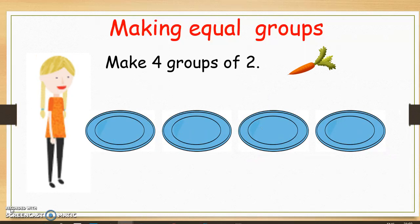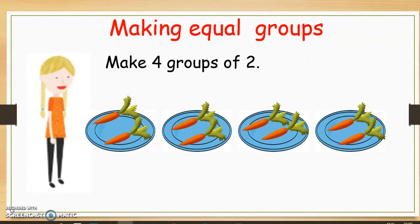Let's have a look at making equal groups. Hannah is going to make four groups of two — she is going to put two carrots on each plate. Maybe you can pause the video here and draw what Hannah is going to do. Let's have a look at Hannah's groups. She put two carrots on each plate.